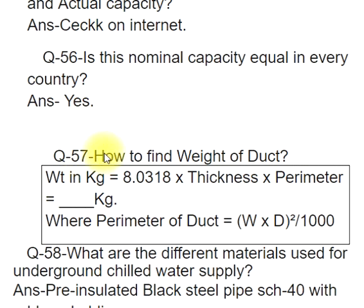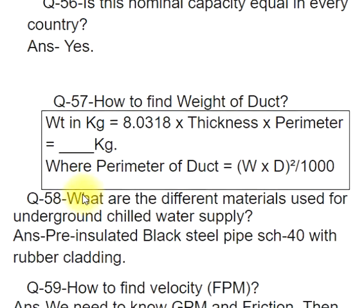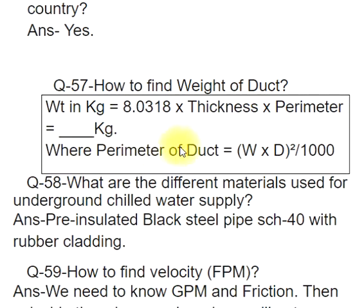Q57: How to find weight of duct? ANS: WT (kg) = 8.0318 × thickness × perimeter (kg). Where perimeter of duct = W × D² / 1000.